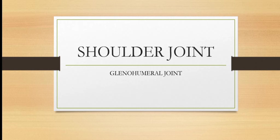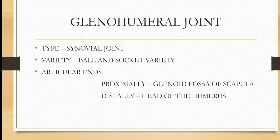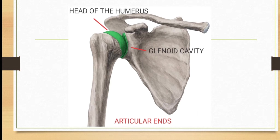Hello friends, welcome to my YouTube channel Essential Physiotherapy. Today we are going to discuss about the shoulder joint, mainly the glenohumeral joint. The shoulder joint is a polyaxial synovial joint belonging to the ball and socket variety. It is formed by the articulation of the glenoid cavity of the scapula with the head of the humerus. The concavity of the glenoid fossa is increased by a fibrocartilaginous ribbon-like structure called the glenoid labrum.